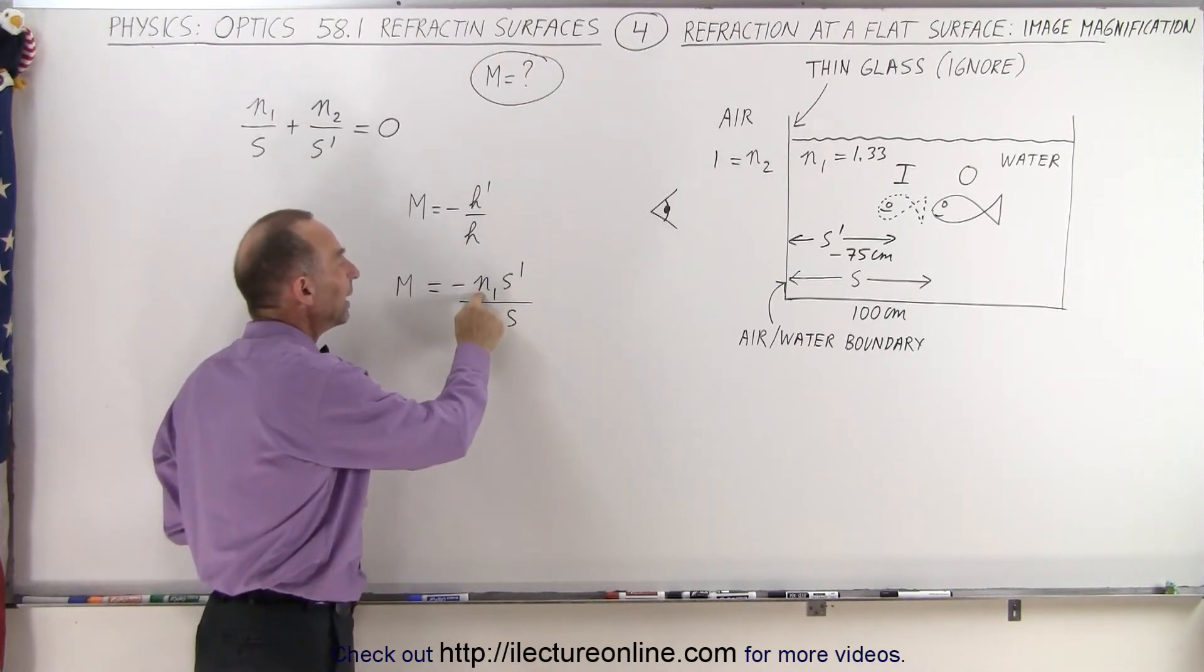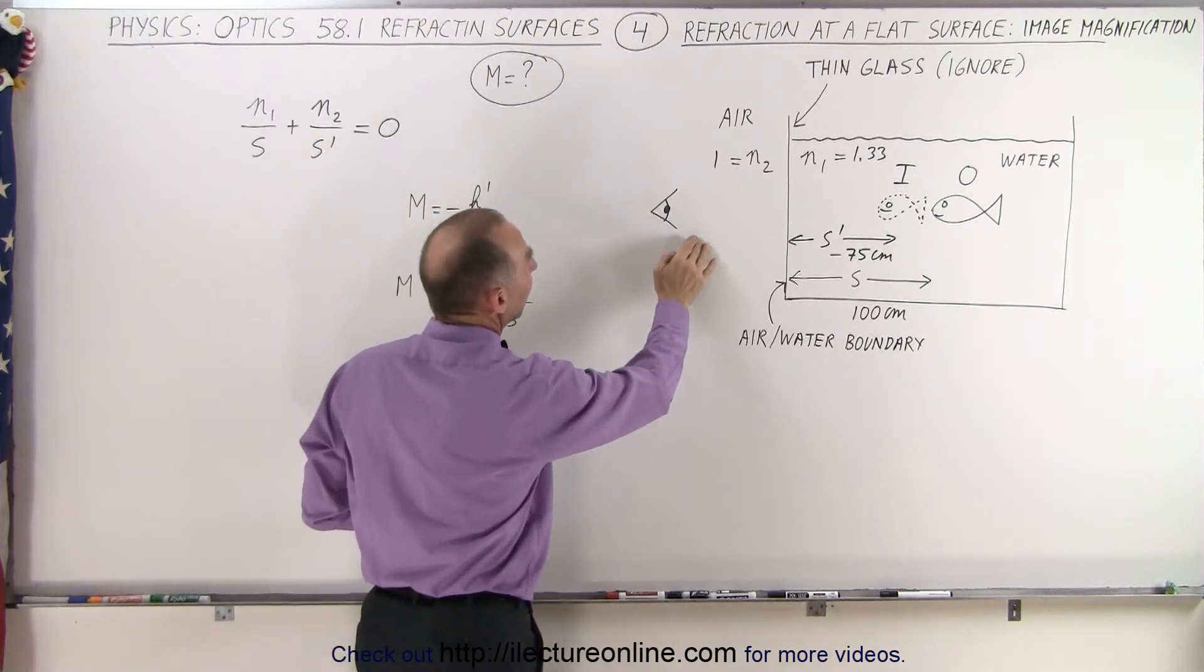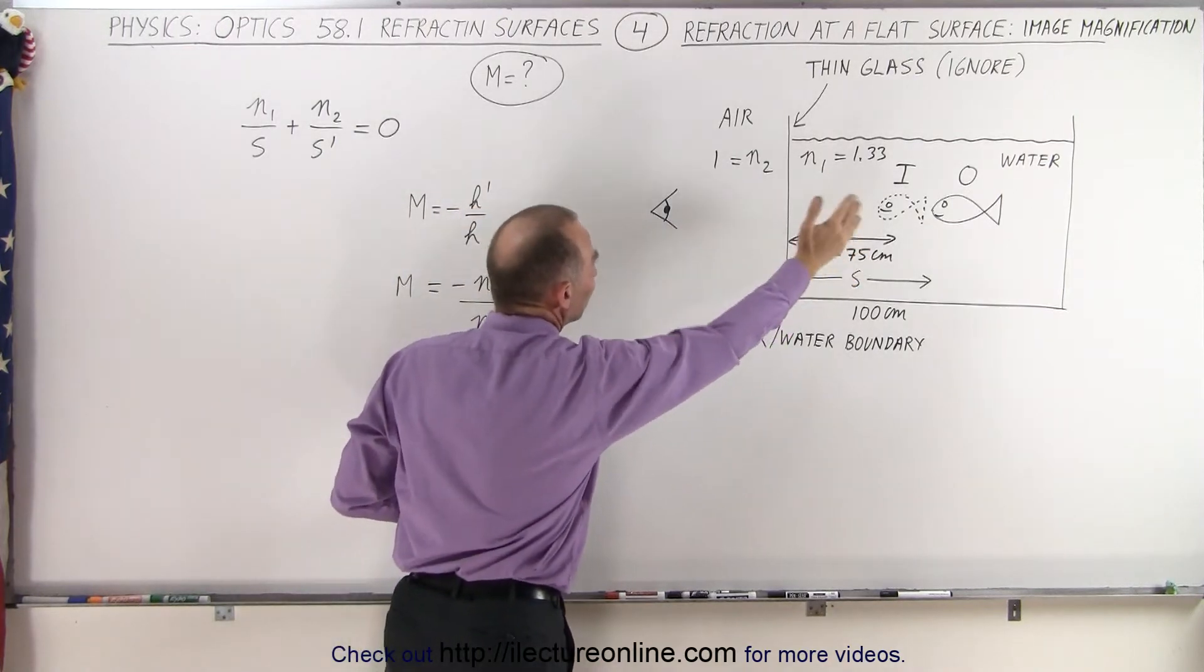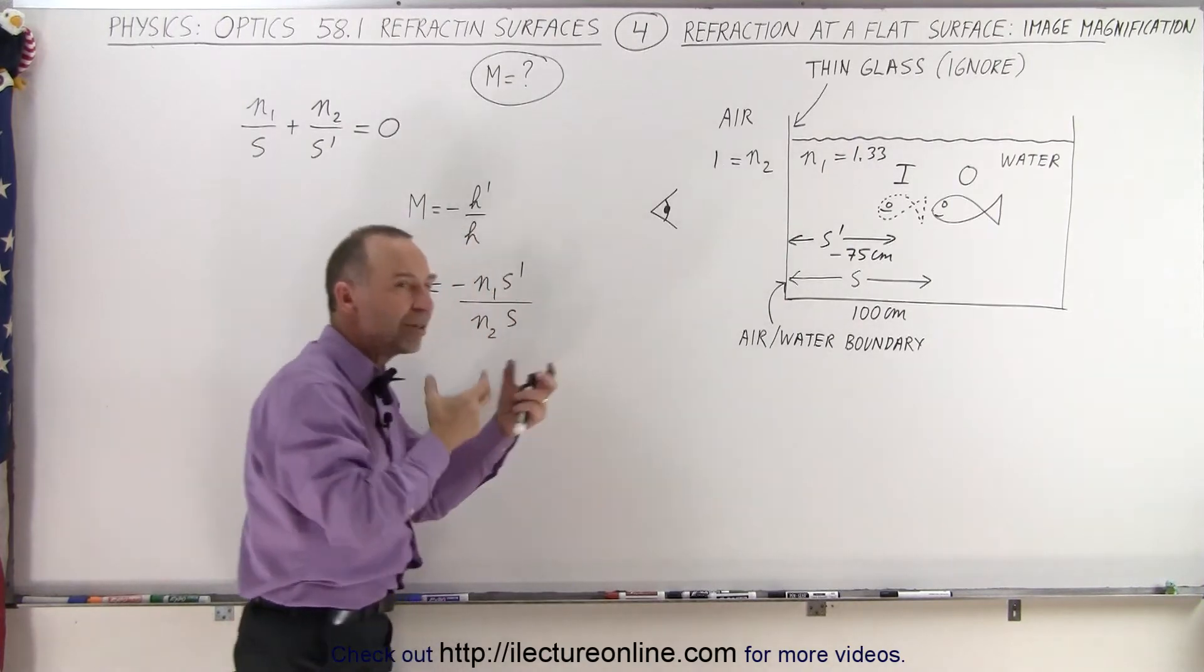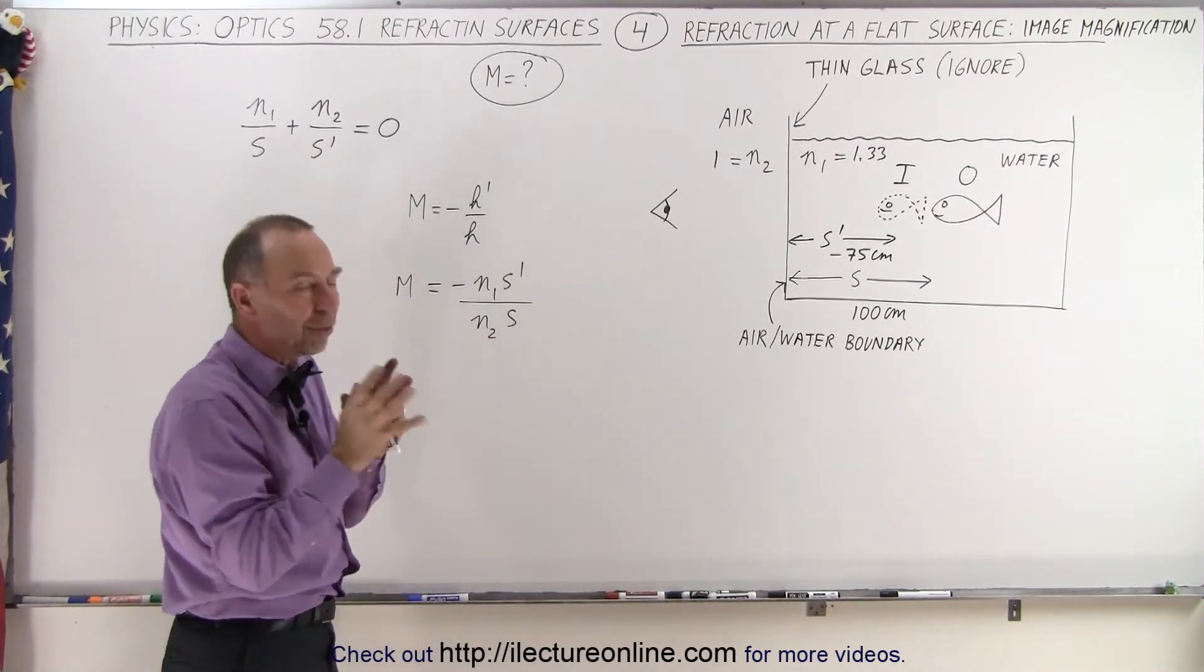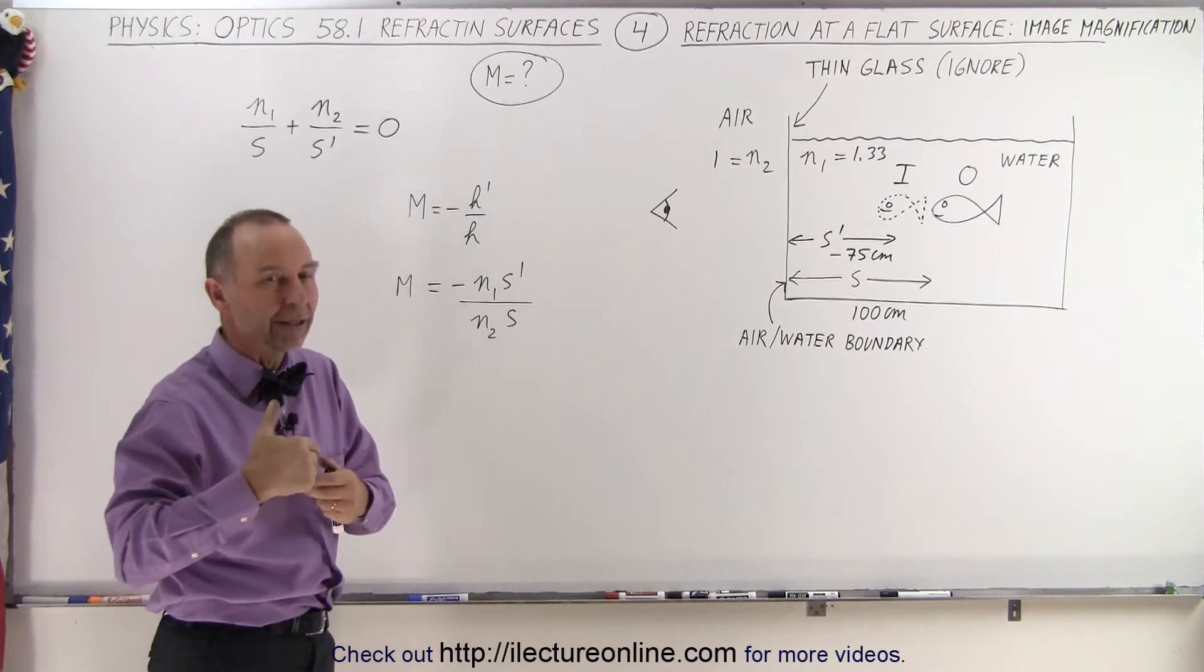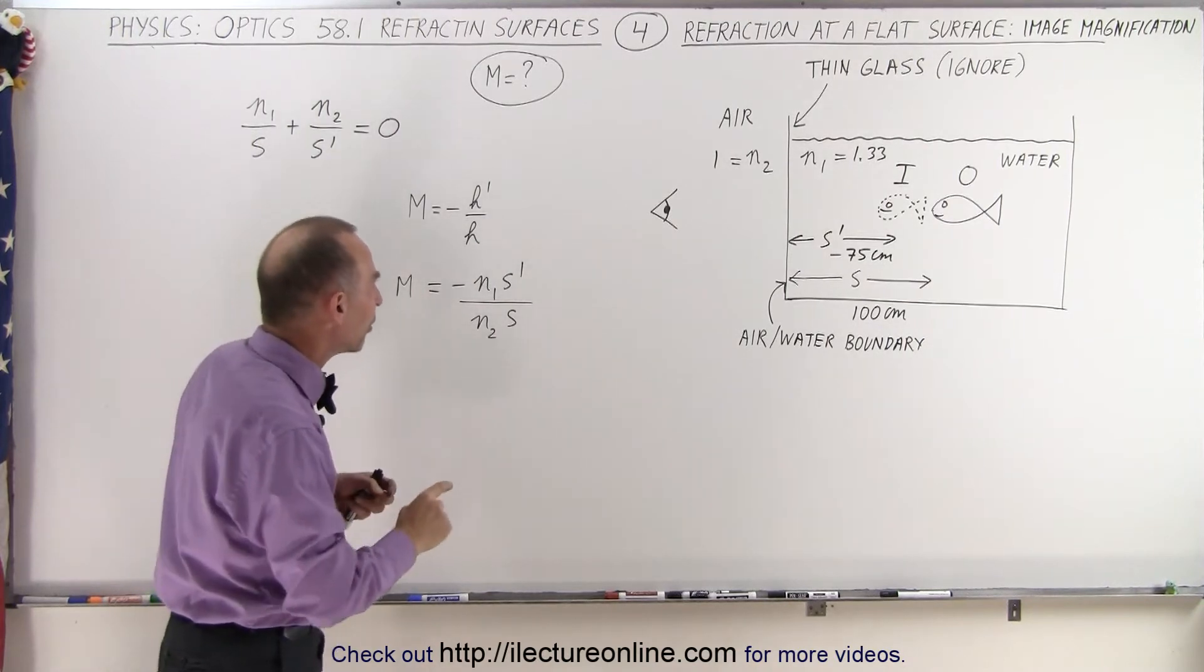Notice that N1 is the index of refraction on the same side as the object and S prime is the distance to the image. So there seems to be like a mismatch. But the reason why that is so, and we'll see it worked out, proved that later in a later video.